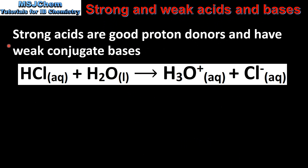Next we look at the conjugate bases of strong and weak acids. Strong acids are good proton donors and have weak conjugate bases. Hydrochloric acid is a strong acid. Its conjugate base is the chloride ion. Because it's the conjugate base of a strong acid, that means it's a weak base.